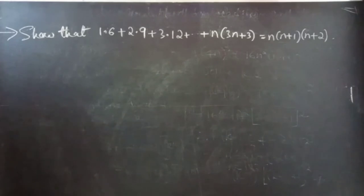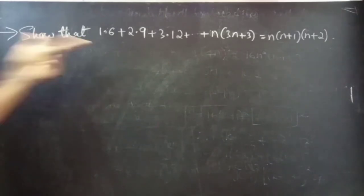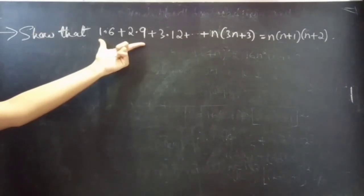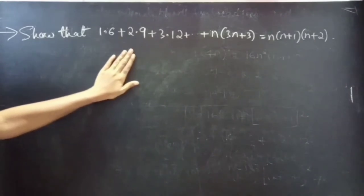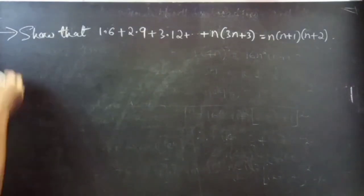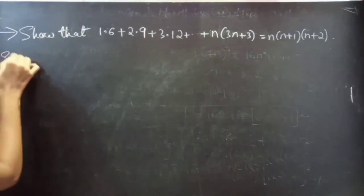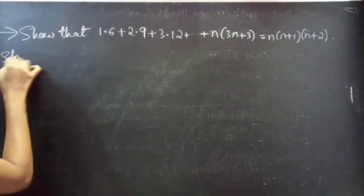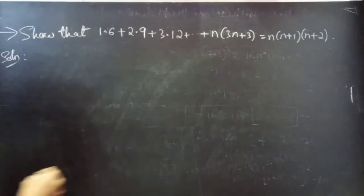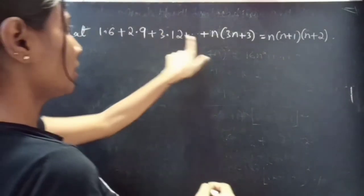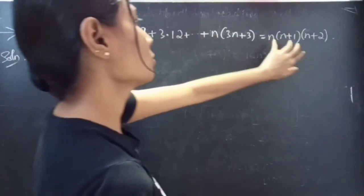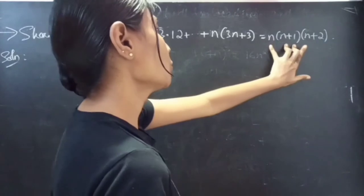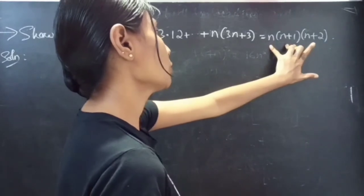Using mathematical induction we are going to show that the statement is true for all n belonging to natural numbers. We have 1, 2, 3 and so on — n terms — equals to n into n plus 1 into n plus 2.